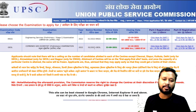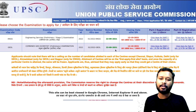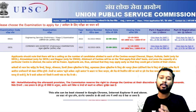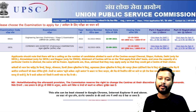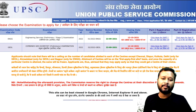The exam is Combined Geoscientist Preliminary Examination 2022. The notice number we discussed in the previous video; the notice date is 22nd September. The closing date of the form is 12th October, so make sure you fill the form before 12th October, before 6 PM — that's the deadline.